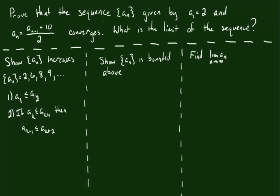So let's go ahead and do it. a_1 is going to be 2, a_2 is going to be 6. And since 2 is definitely going to be less than or equal to 6, we know that a_1 is going to be less than or equal to a_2.